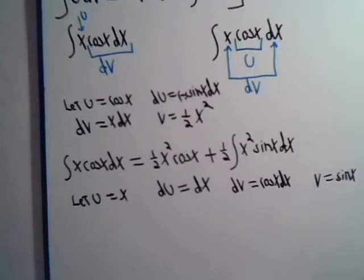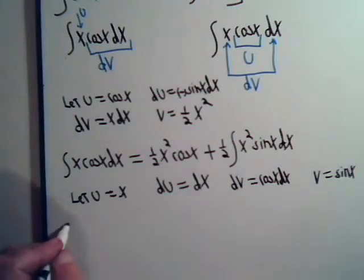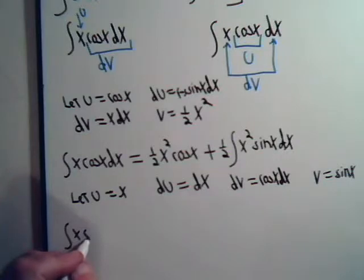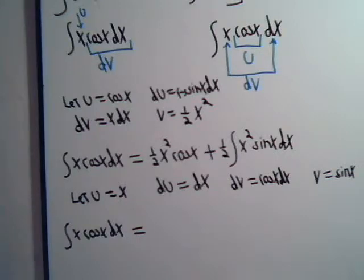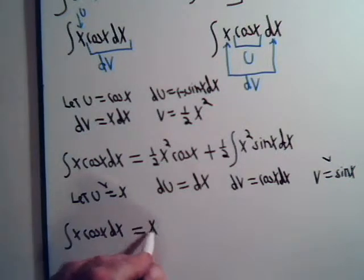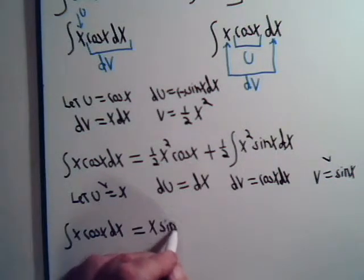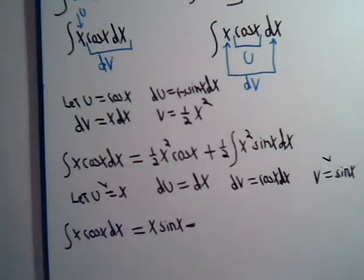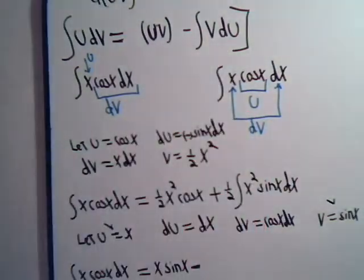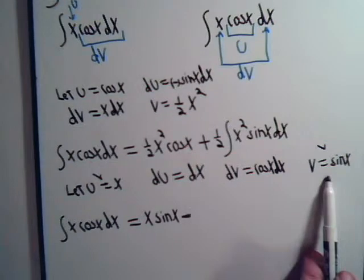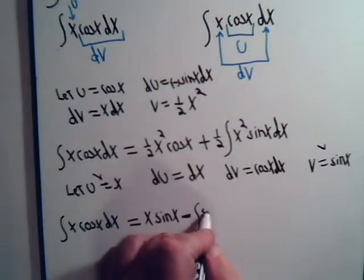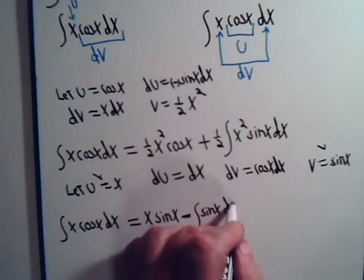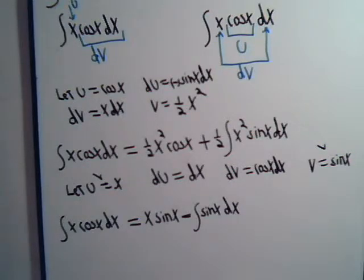So, now we apply the formula. The integral of x times the cosine of x dx equals u times v. There's u. There's v. So, we have x times sine of x minus the integral of v du. There's v. There's du.